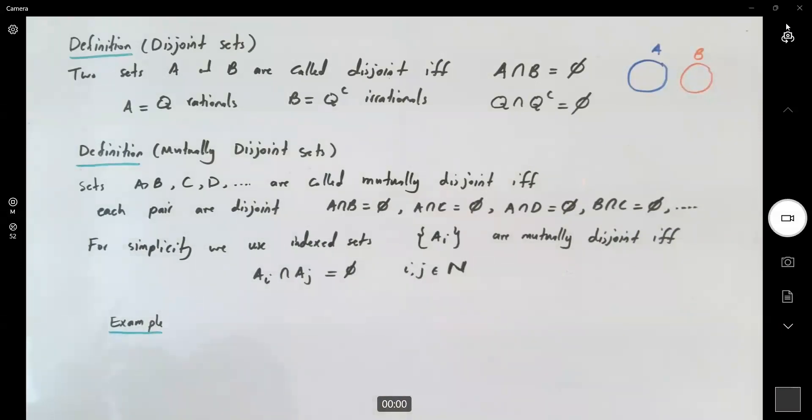For example, suppose I give you the following sets. A sub 1 is defined as 3 and 5. A sub 2 is defined as 1, 4, and 6. And finally, the third set is defined as the set including 2.